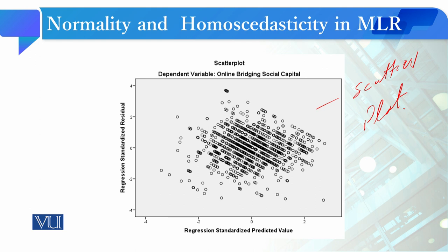Here we check that our standardized residuals and predicted residuals show no funnel or cone shape — there is no systematic pattern in the scatter plot that would indicate a violation of homoscedasticity.